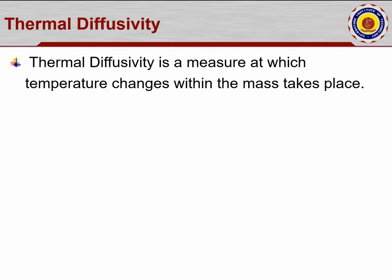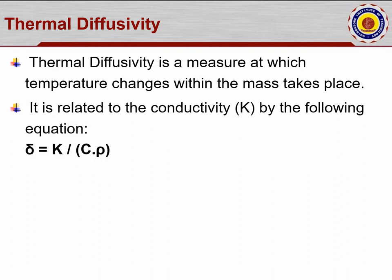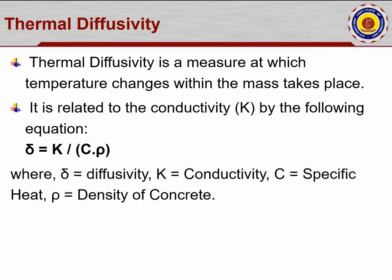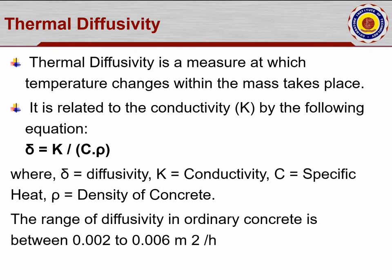Thermal diffusivity is a measure at which temperature change within the mass takes place. It is related to conductivity by the equation: delta equals k divided by c into rho, where delta is diffusivity, k is conductivity, c is specific heat, and rho is the density of concrete. It can be measured practically as well as calculated theoretically from known values through basic preliminary tests.